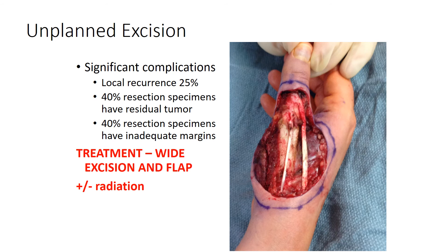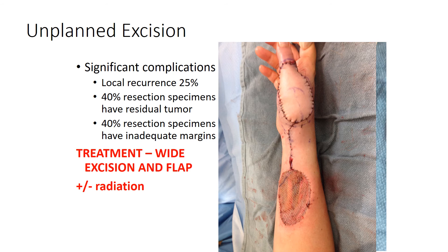A common question involves the unplanned excision — a lump removed that turns out to be a sarcoma. When an unplanned excision occurs: local recurrence rate is 25% or greater; 40% of re-excision specimens have residual tumor; and 40% of primary resection specimens have inadequate margins. Treatment is wide re-excision with or without radiation therapy, possibly requiring flap coverage. The area cannot be observed — it must undergo resection to negative margin and radiation, possibly requiring a large flap such as a radial forearm flap.